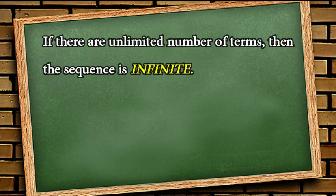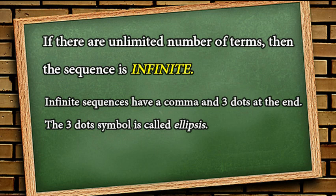If there are unlimited number of terms, then the sequence is infinite. Sa Tagalog, walang katapusan. Infinite sequences have a comma and 3 dots at the end. The three dots symbol is called ellipsis. So pag infinite sequence, may makikita kang tatlong dots after ng last comma. Ano ang tawag doon? Ellipsis.